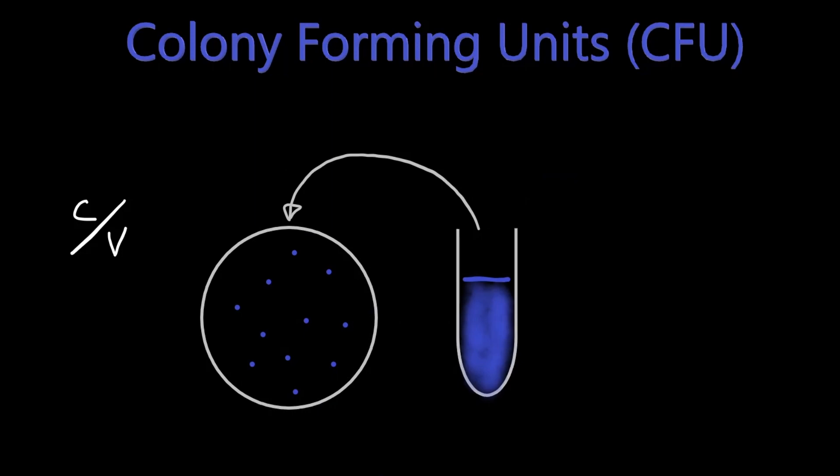In microbiology, we need a way to figure out or estimate the number of cells or bacteria or fungal species, whatever you're looking at, in a target sample. And one of the ways to do this is colony forming units.